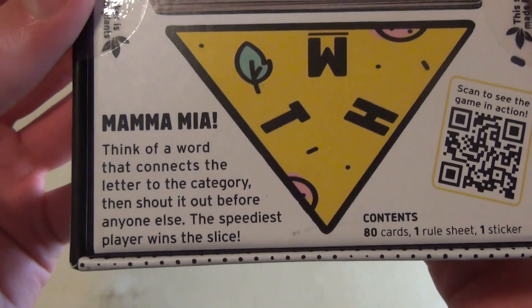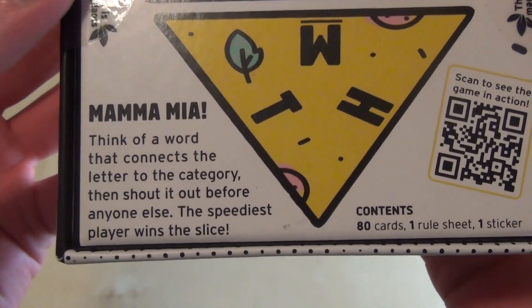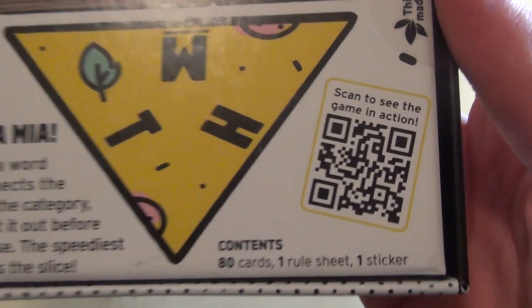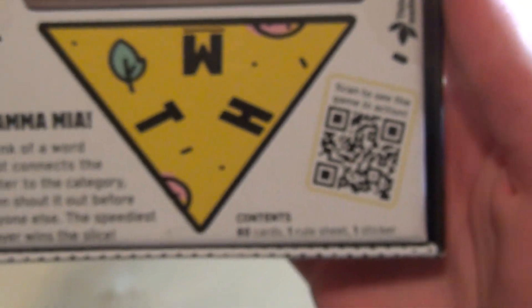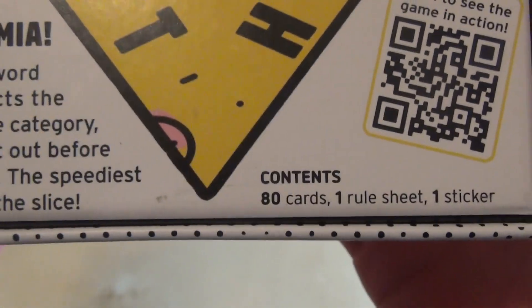Think of a word that connects the letter to the category, then shout it out before anyone else. The speediest player wins the slice. Scan to see the game in action. Contents: 80 cards, one rule sheet, and one sticker.